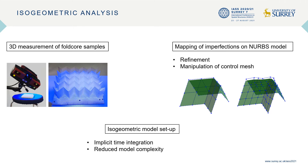For the isogeometric simulation, an implicit time integration was used. To keep the calculation times low, the model was also reduced to a single fold core cell, similar to the cell seen in the last slide. This is possible by applying periodic boundary conditions at the cell edges to replicate the behavior of a full fold core structure.